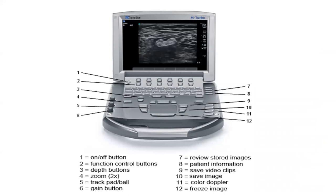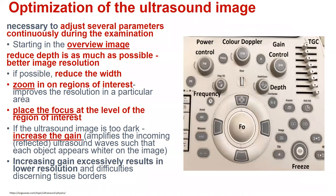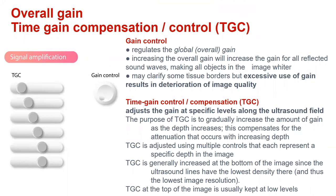When we switch on an ultrasound, we have to optimize the ultrasound image. It's necessary to adjust several parameters continuously during the examination, starting with the overview image, for which we have to reduce the depth as much as possible for better image resolution, and reduce the width if possible. Then zoom in on regions of interest and place the focus at the level of the region of interest. If the ultrasound image is too dark, we can increase the gain, but with increasing gain we lose resolution. That's why we can use the so-called time gain compensation, adjusting the gain at specific levels along the ultrasound field.